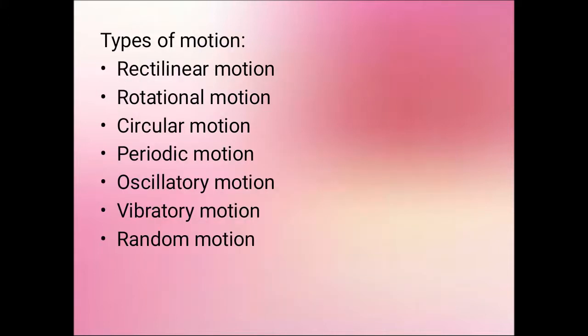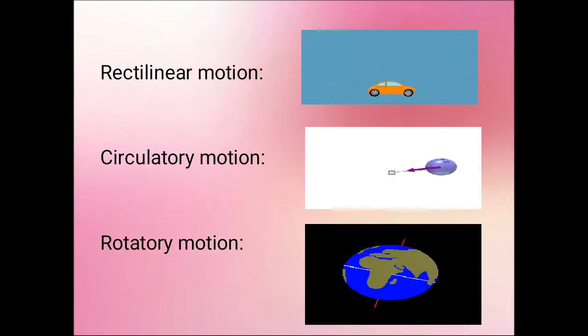Next we saw about some of the types of motions: rectilinear motion, rotational, circular, periodic, oscillatory, vibratory, and random. The object that moves in straight line is called rectilinear. If an object moves in circle path about a fixed point is called circular motion. And if an object rotates along its axis is called rotatory motion.